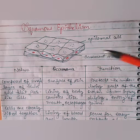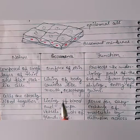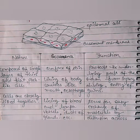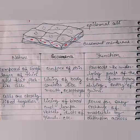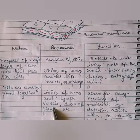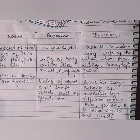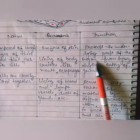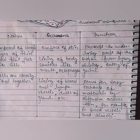These cells rest upon the basement membrane. Squamous epithelium is found at the surface of the skin — the upper part of our skin is made up of squamous epithelial tissue — and in the lining of body cavities like the mouth and esophagus, lining of blood vessels and lymph vessels, and ducts of glands. Its function is to protect the underlying part of the organ from injury, drying, and entry of germs. It also serves for easy exchange of material by diffusion, for example in blood vessels and alveoli.